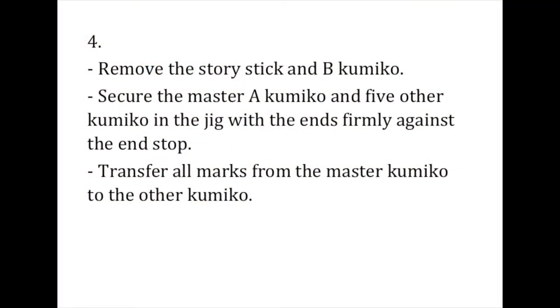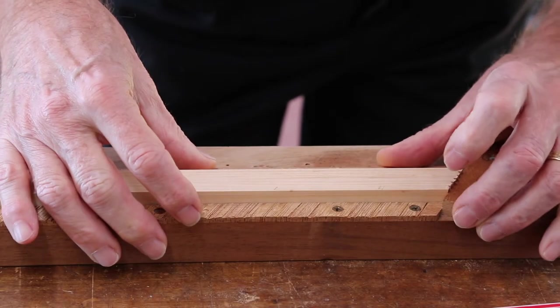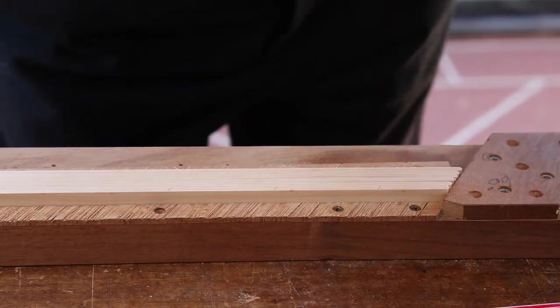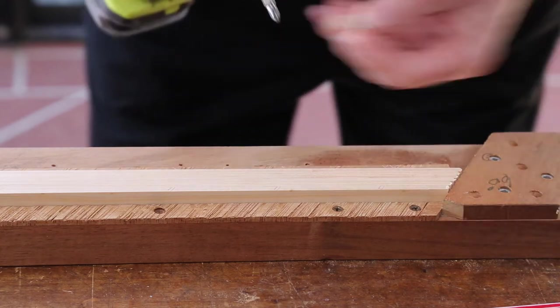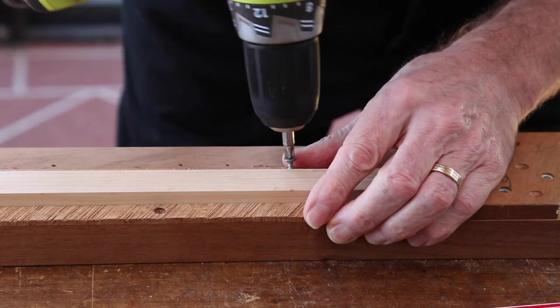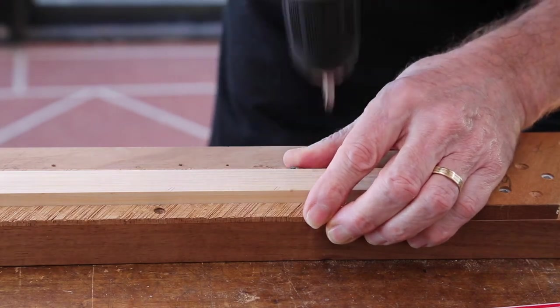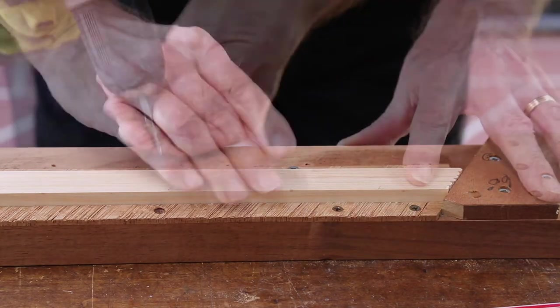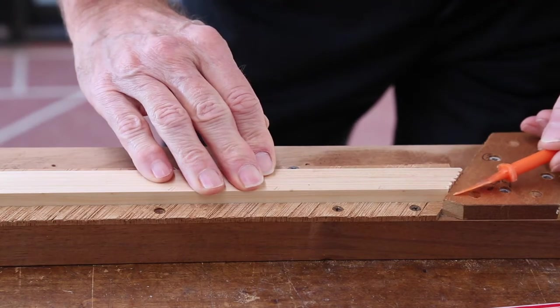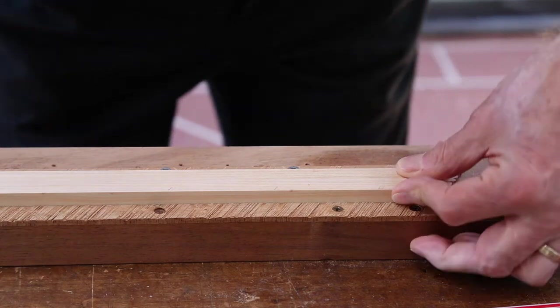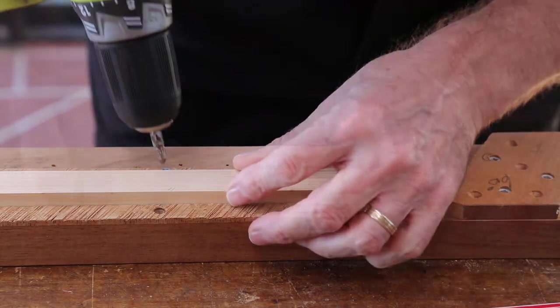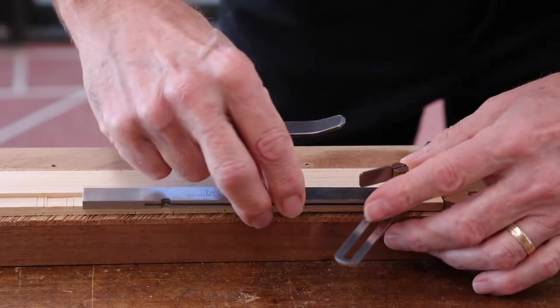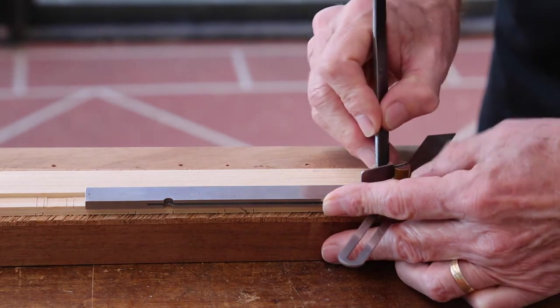Remove the story stick and the master B kumiko, and secure the master A kumiko and five other kumiko in the jig. When you're satisfied the ends are firmly against the end stop, tighten the support screws. Next, extend the marks across all kumiko as normal.